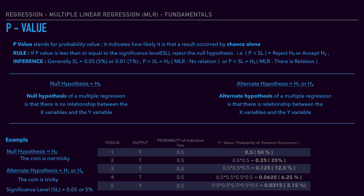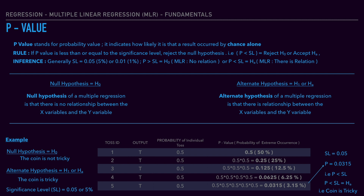That is where the significance level plays a role. We have a 5% significance level. After four tosses, the P-value was 6.25%, which is above 5%, so we continued for one more toss. After five tosses, the P-value dropped to 0.03, which is below the significance level of 0.05. Following the thumb rule, since P is less than the significance level, we accept the alternative hypothesis: the coin is tricky. That is how we conclude an output based on P-value and significance level.